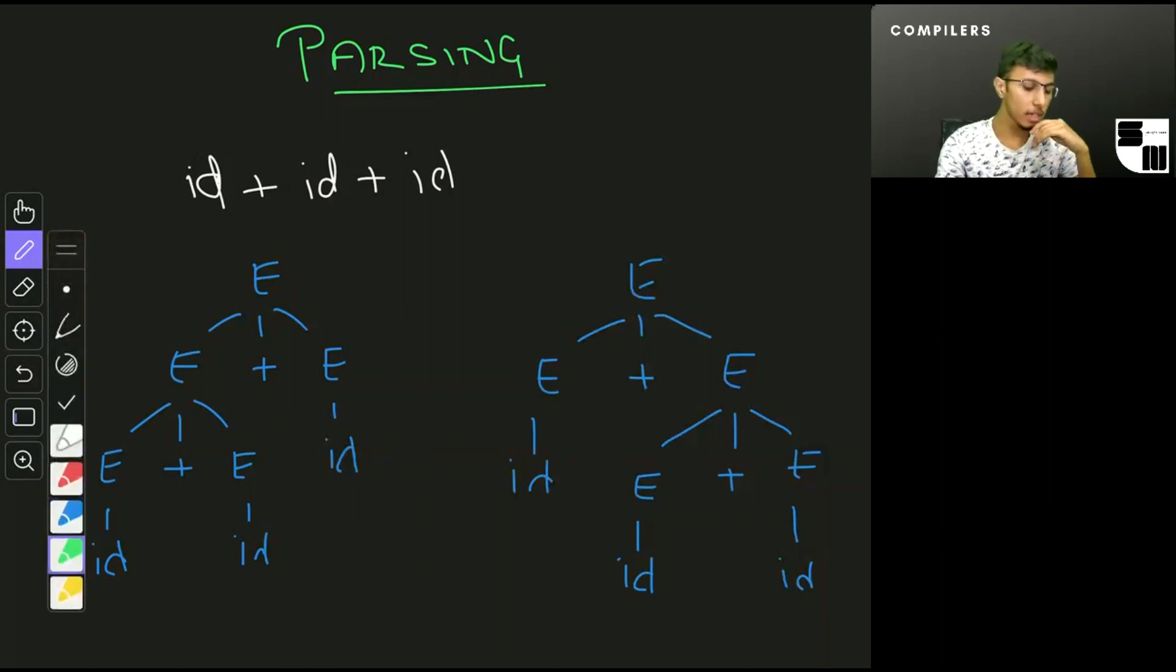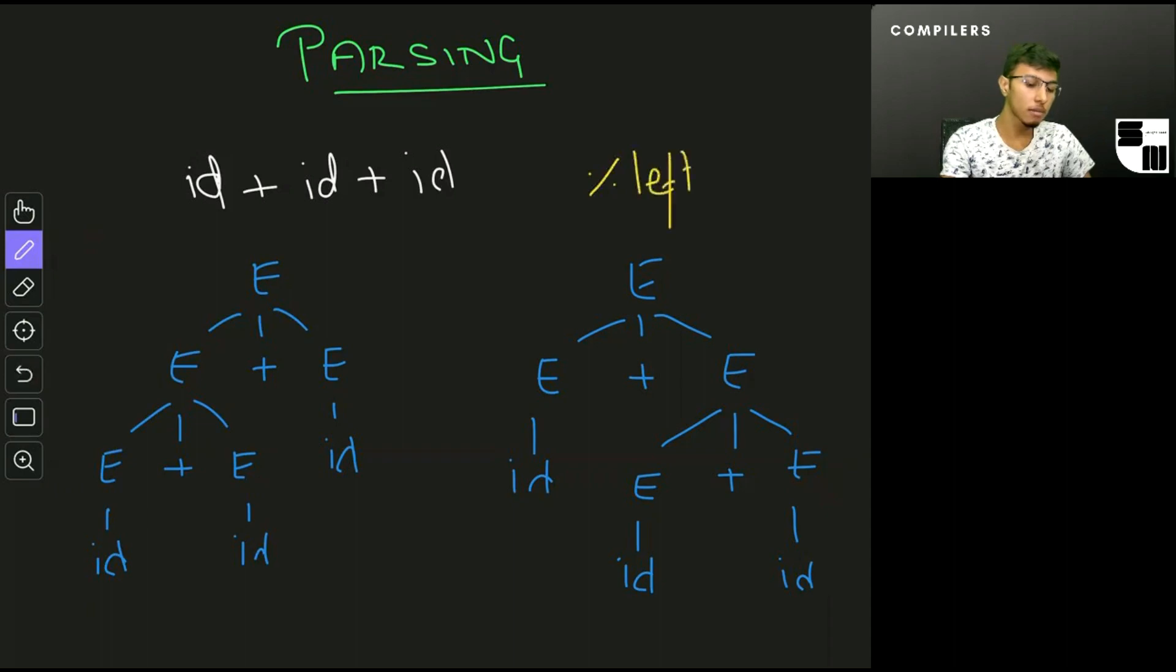One of the ways to do it in a tool called Bison, which is used for parsing, is to write something like this. We just specify that the plus operator is left associative. What that means is that it ensures that the left parse tree is the one that's used, so it cancels out the right parse tree.